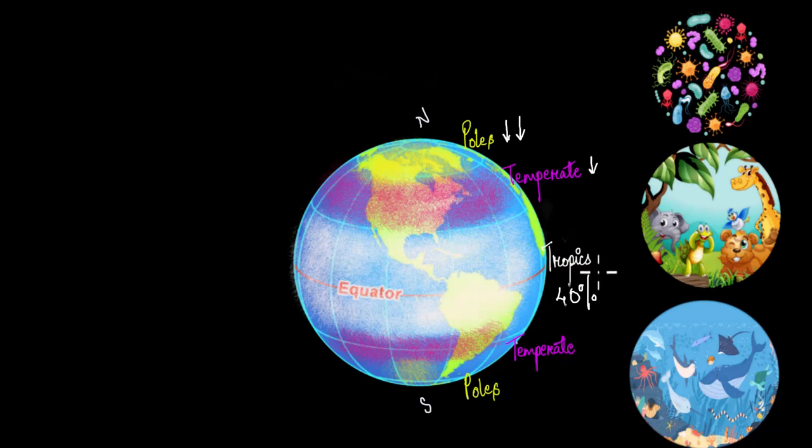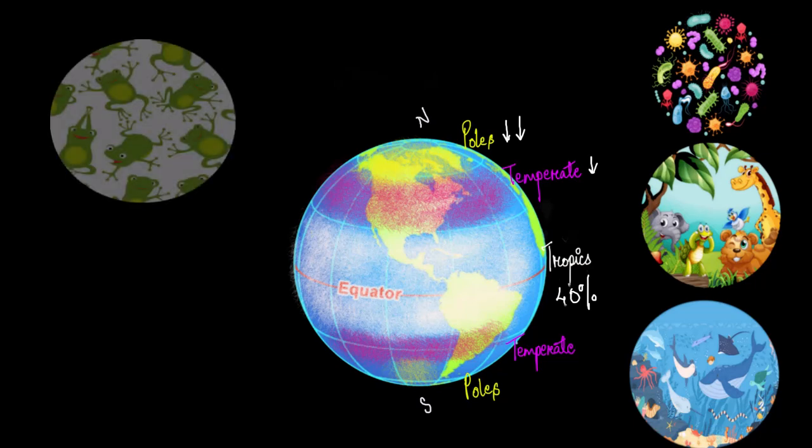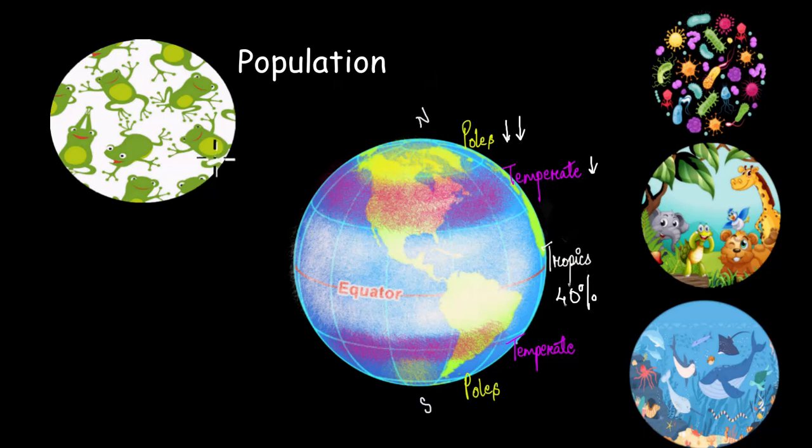Well, let's check if that's true. Let's take an example of a frog species, the green frog. This is just an ordinary neighborhood frog. Now let's assume that they live near the equator, in the tropics. If they have more area and more resources, they will reproduce more and their population will increase.